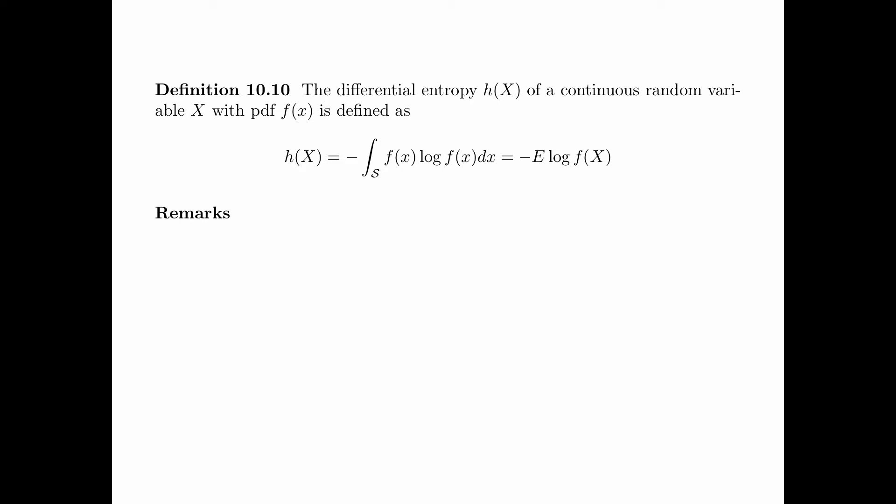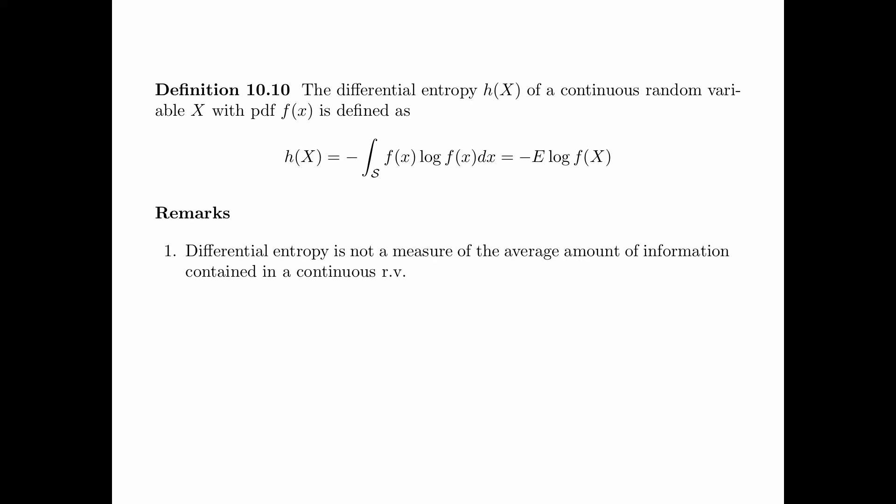Here are some remarks. Differential entropy, unlike discrete entropy, is not a measure of the average amount of information contained in a continuous random variable. This is so despite the fact that differential entropy and discrete entropy have very similar forms. A continuous random variable generally contains an infinite amount of information, as illustrated in the next example.